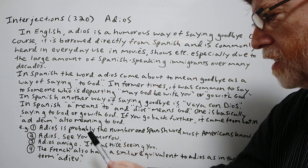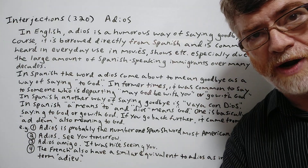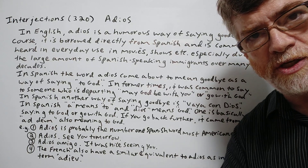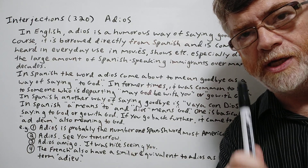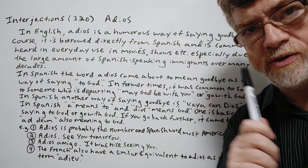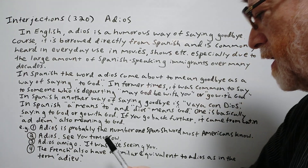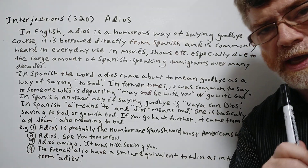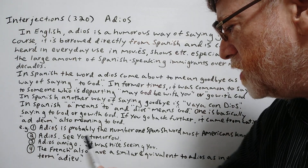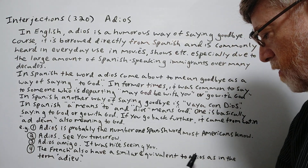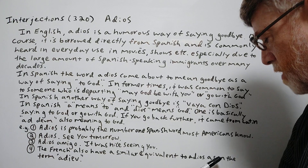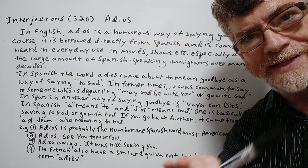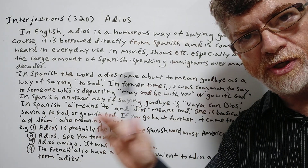Example three: 'Adios amigo.' Amigo of course means friend, but you hear a lot of Americans use this too — it's another very common Spanish word often used in English, as in 'It was nice seeing you.' Example four: the French also have a similar equivalent to adios in the term 'adieu,' with kind of the same use and origin.